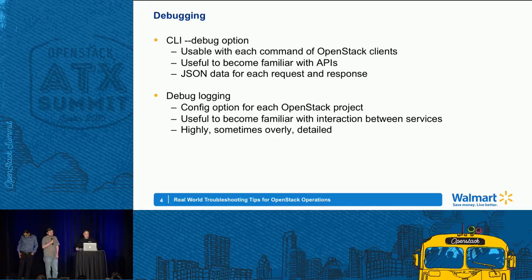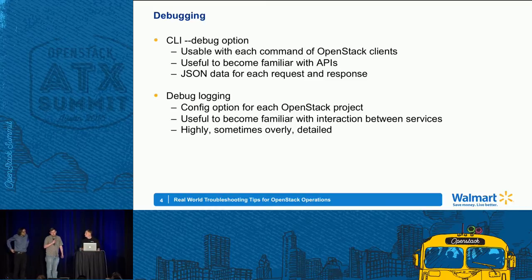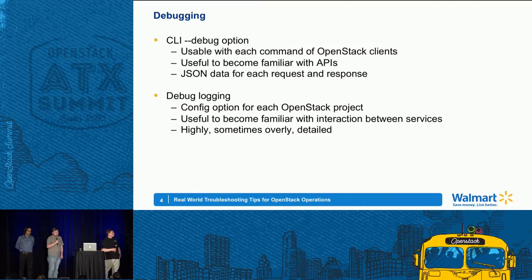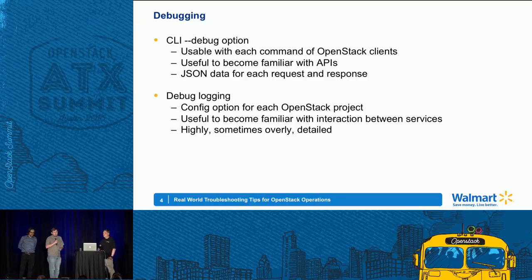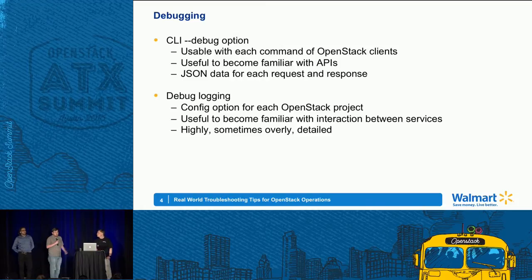The first thing with any troubleshooting is you want to have more information about what happened, what went wrong. OpenStack has a couple of really easy options for that with the CLI clients. Every client — like Nova, Neutron, Glance, Keystone — they each have a --debug option that you can provide when running any command. What that'll do is give you the actual curl API request made against the API endpoint, the JSON data that went to that request, and the JSON data coming back.